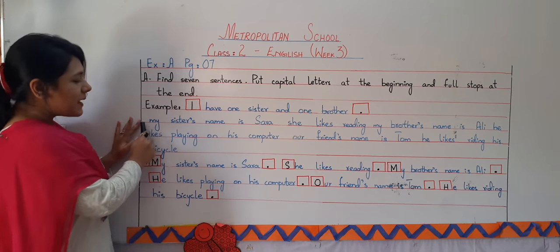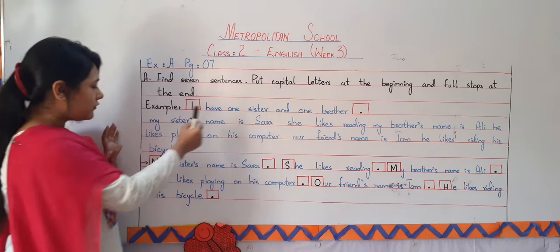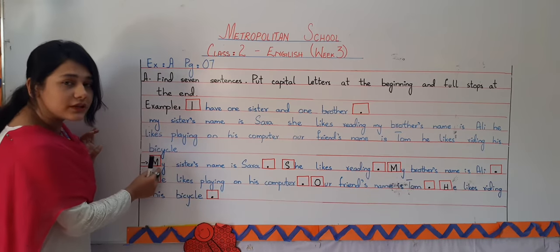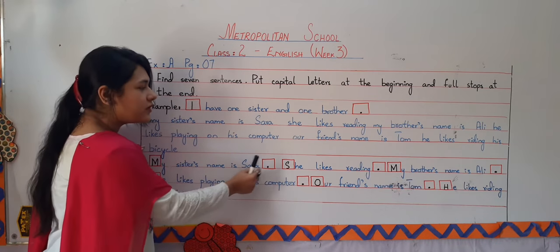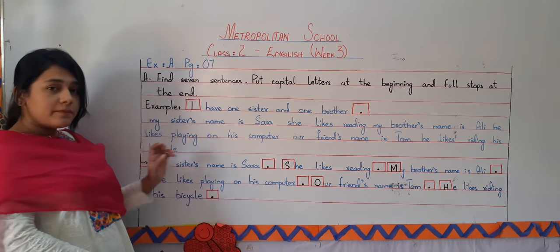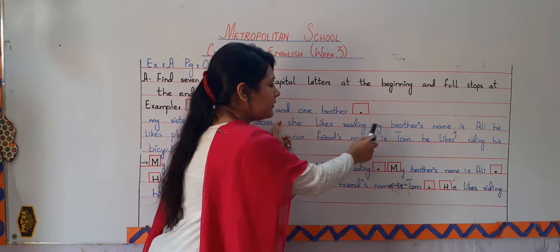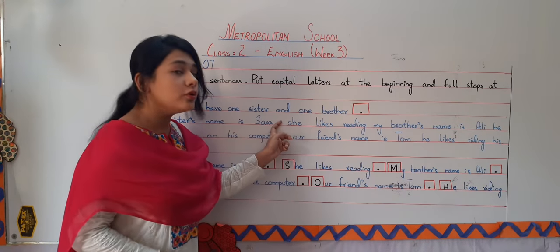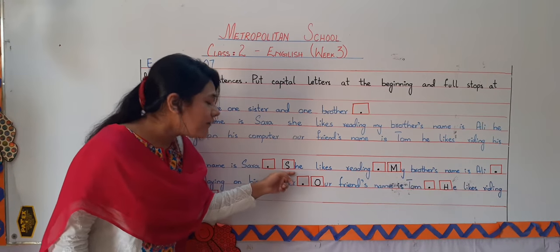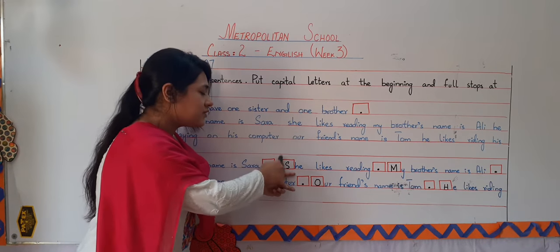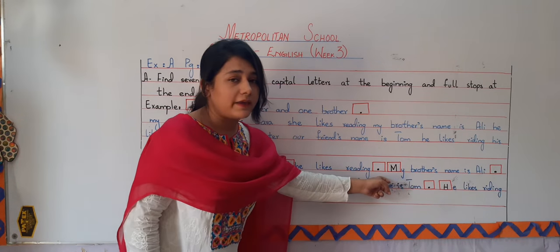The first sentence is 'My sister's name is Sarah.' We will turn M into capital form and put a full stop after Sarah. Then the paragraph says 'She likes reading.' The first alphabet is S, so we have changed S to its capital form and put a full stop at the end.